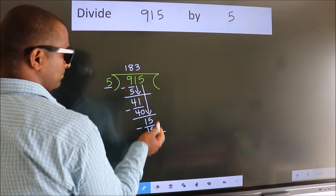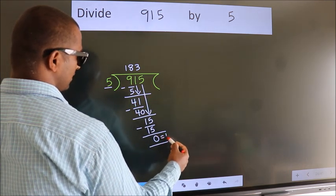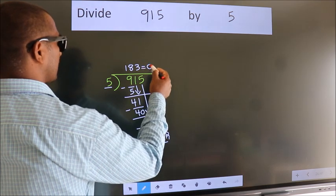No more numbers to bring it down. So we stop here. This is our remainder. This is our quotient.